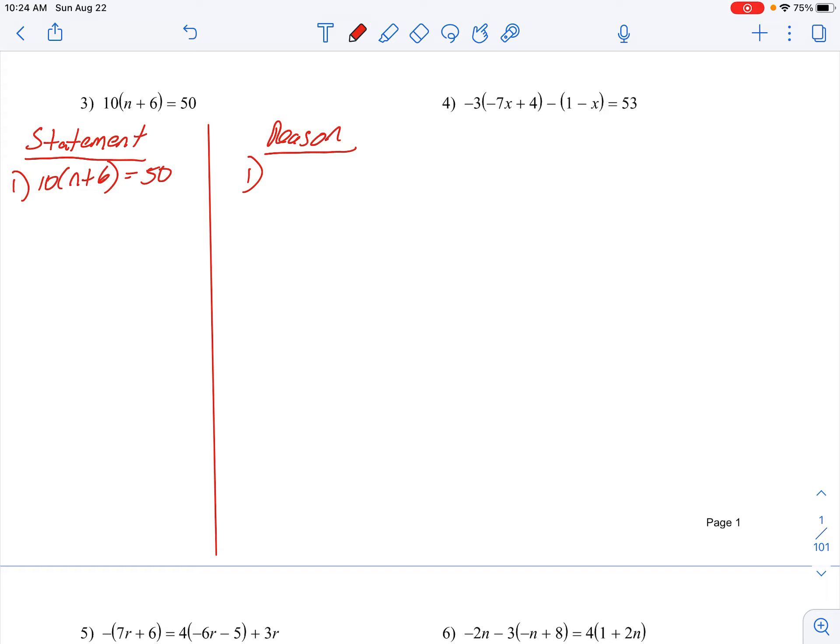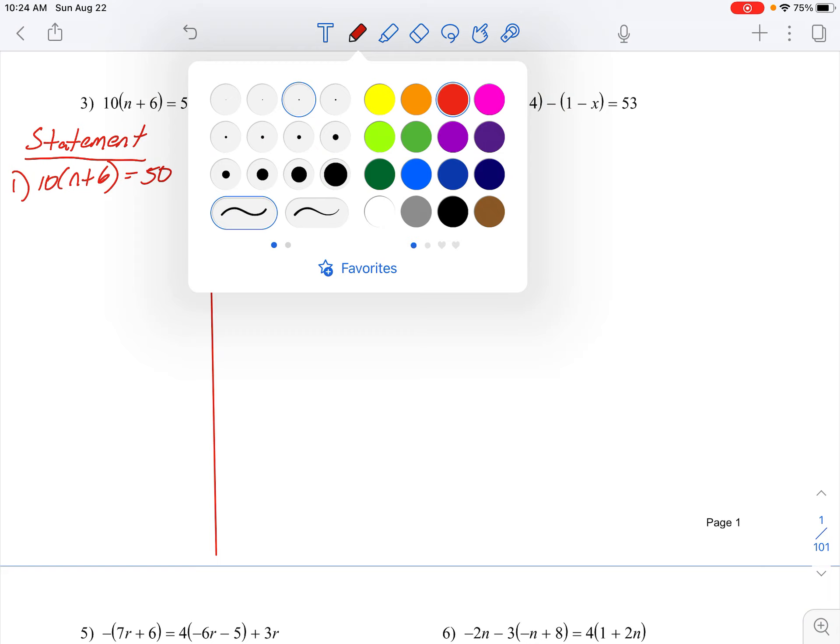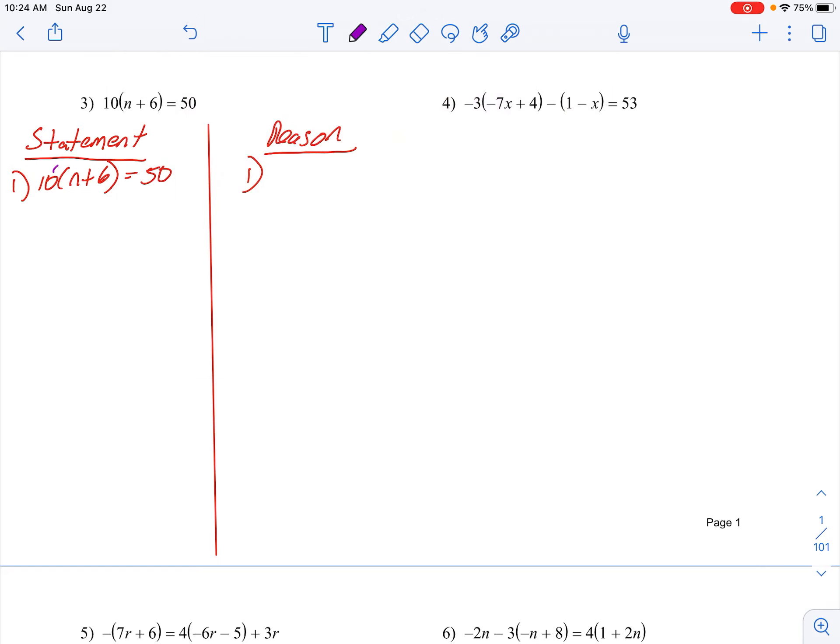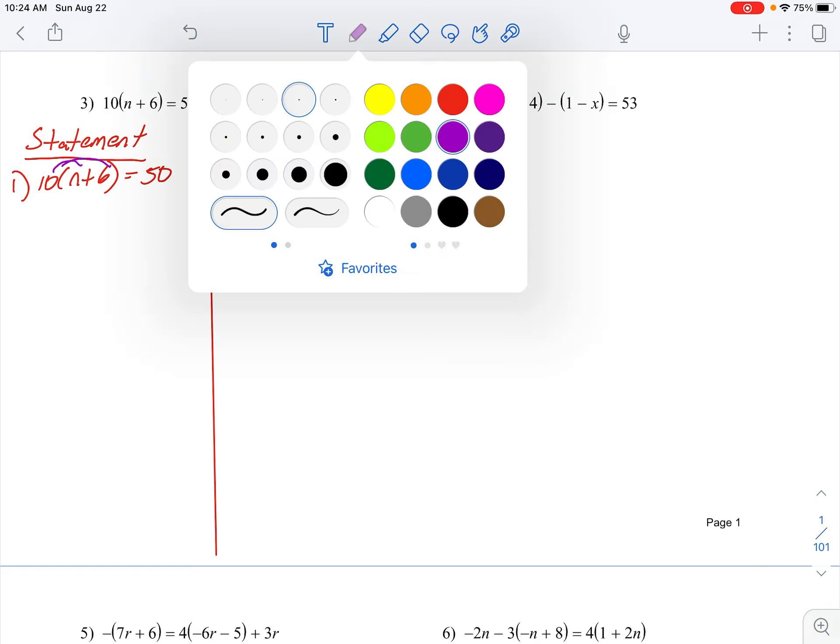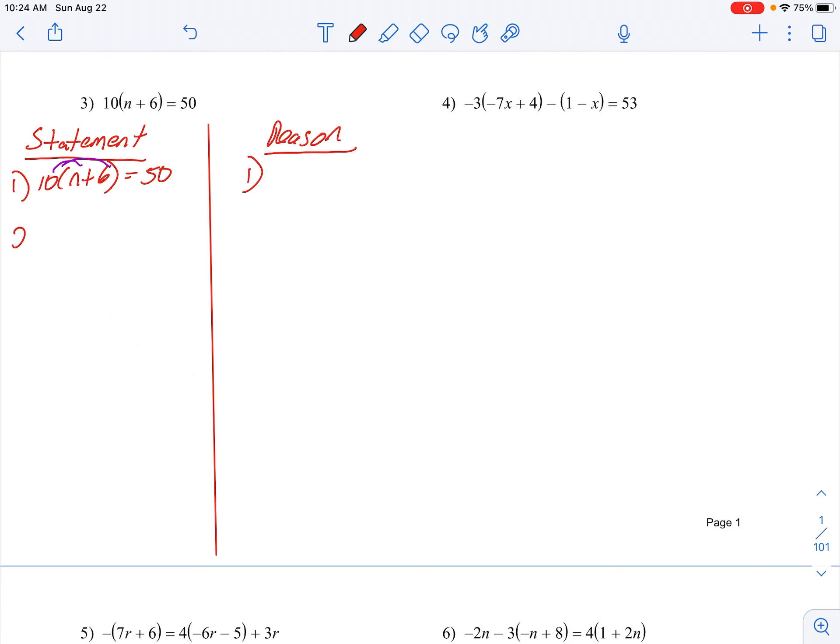Now I'm gonna work the statement column first and then I'll come back around and work the reason column. So don't overthink this. What would be the first thing you would do to start solving out for n? And we know to get rid of parentheses by using our distributive property. So on step two, distribute the 10, 10n plus 60 equals 50.